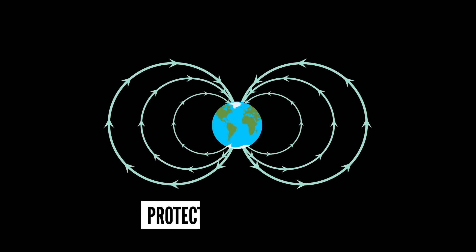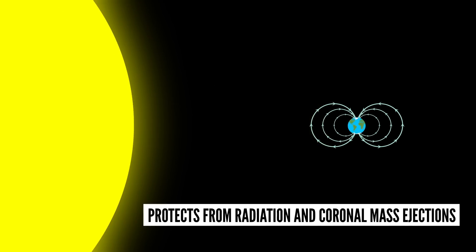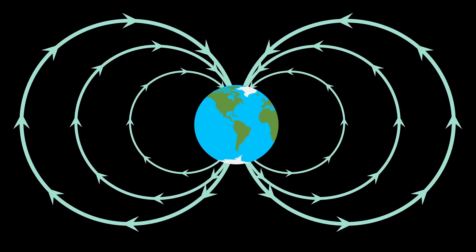It also has a magnetic field that protects us from radiation from space and coronal mass ejections from the sun. Earth has had this magnetic field for millions of years.